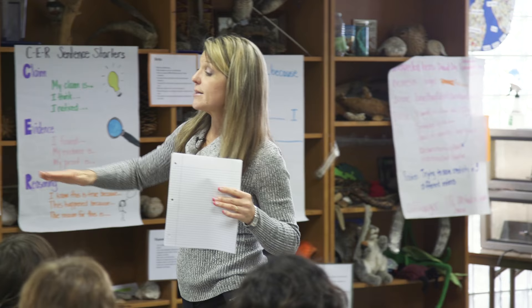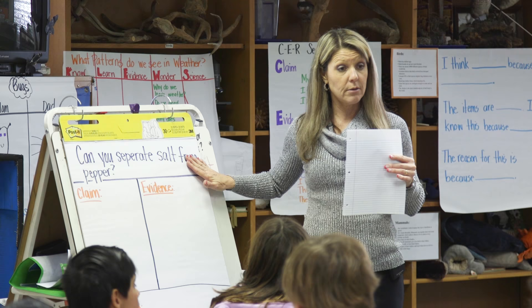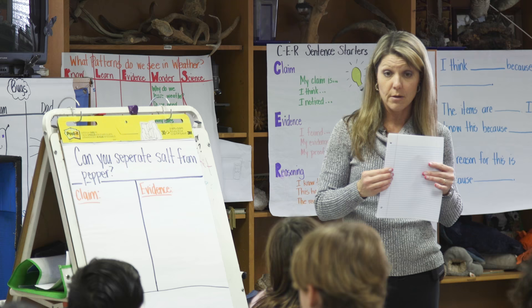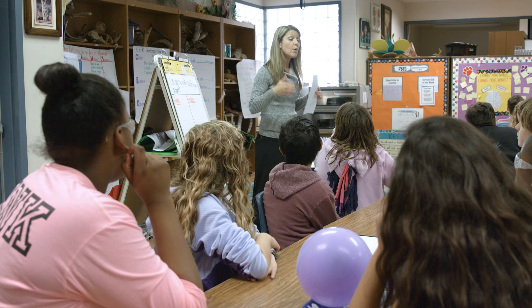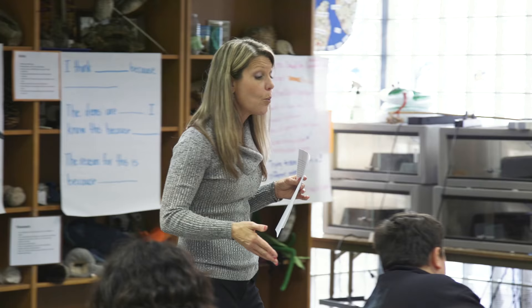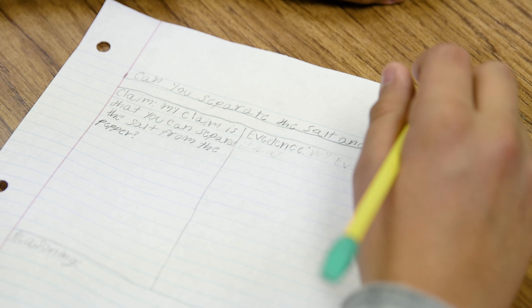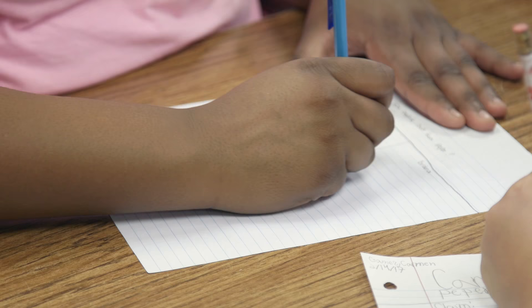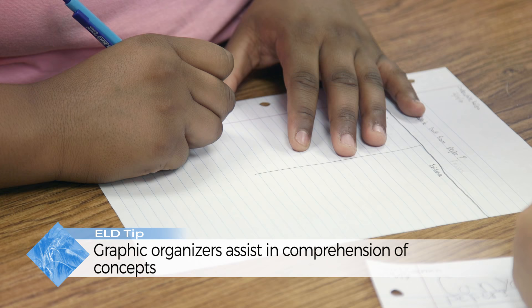I would like for you to please set up your paper as you see here — write your question, claim, evidence, and reasoning. Before you write down your information, I'm going to give you a few moments to talk with your group about what you think your claim is and what strategies worked or did not work during your investigation. I always help them make sure they know how to format their paper and encourage them to talk with their group, then answer their claim with their answer and jot down their evidence on the right-hand side.